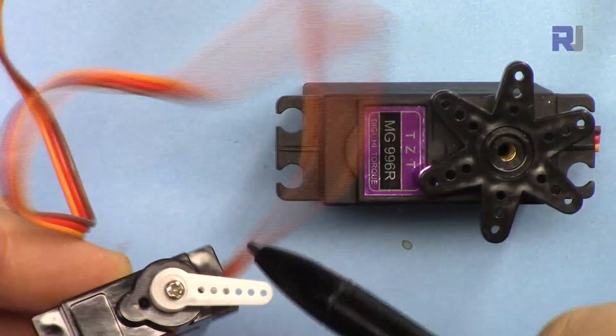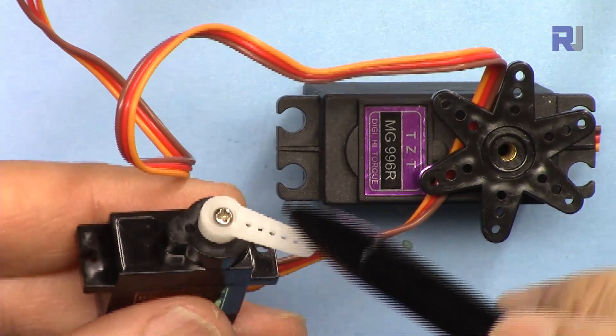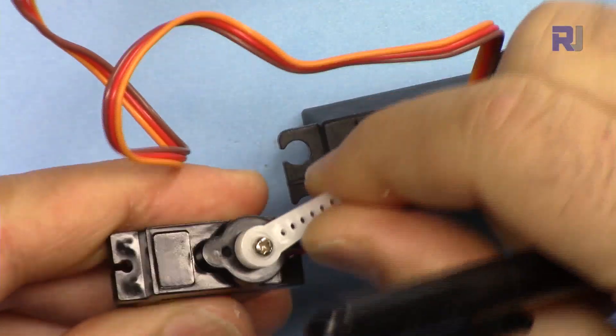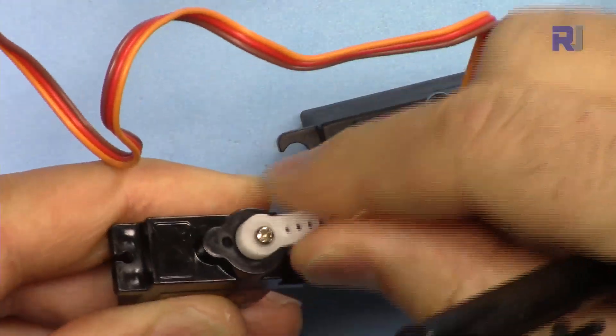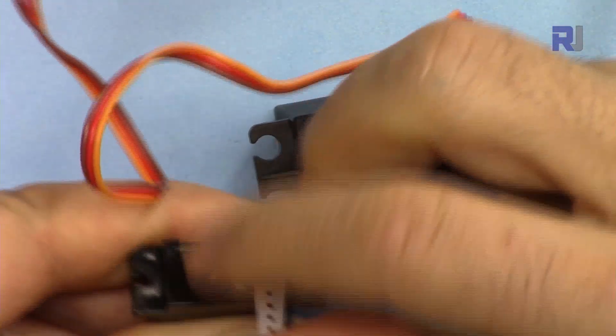The servo motor is a type of motor that the shaft can be controlled to move only 180 degrees or half a circle. You can control precisely where it should be between 0 and 180 degrees.